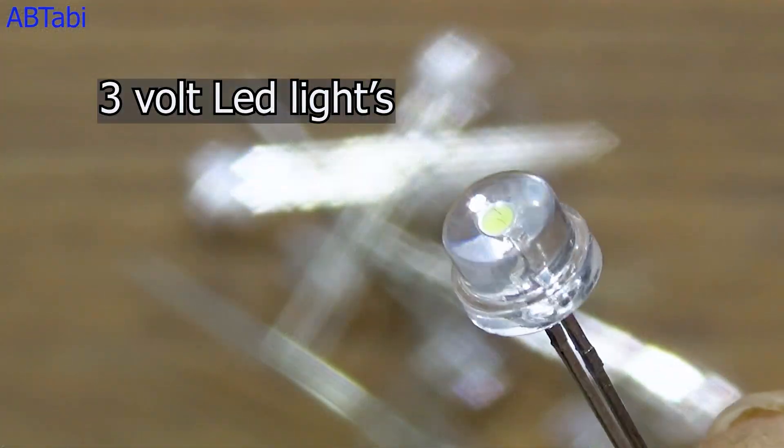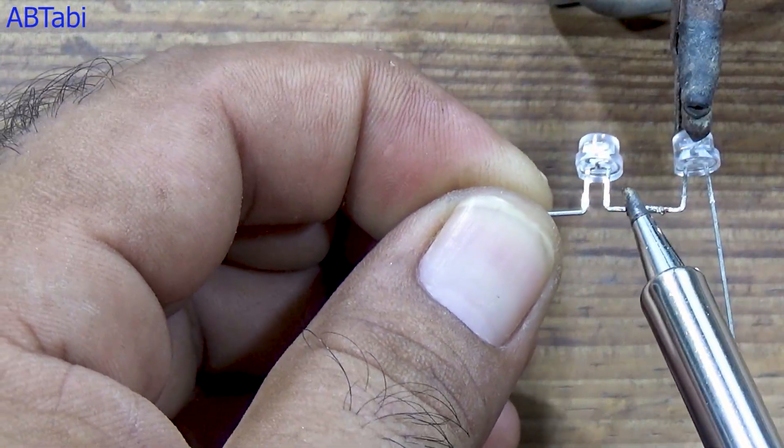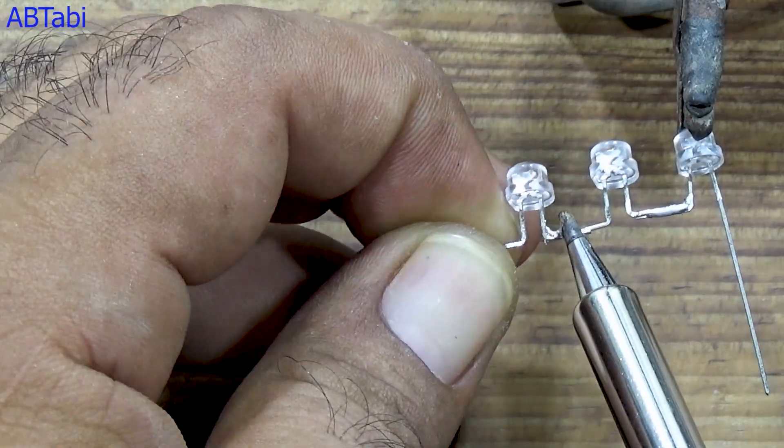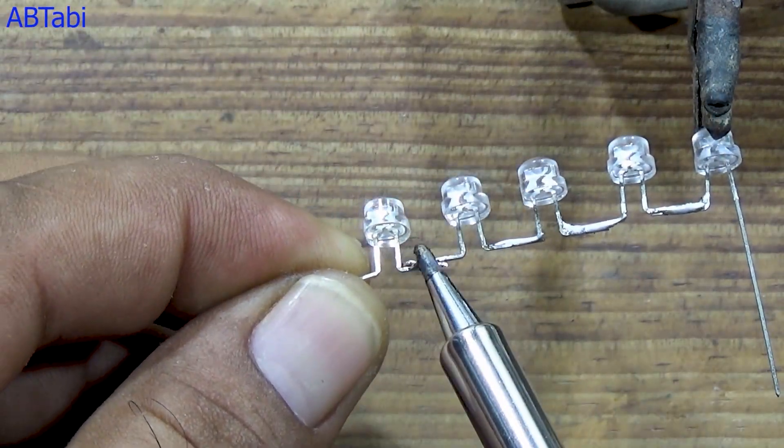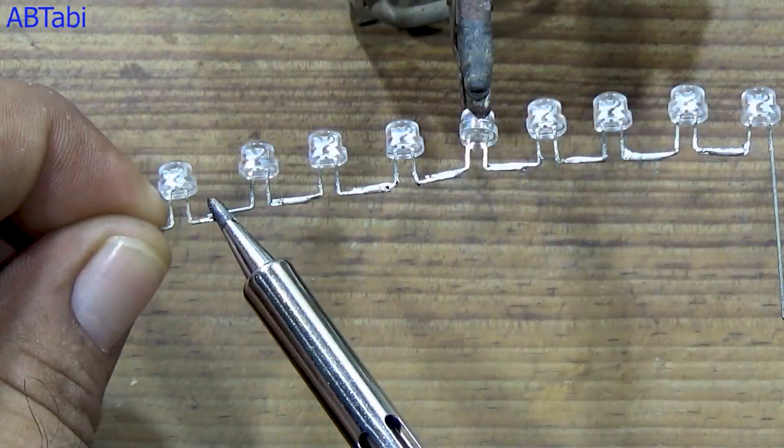Did you know you can make an LED bulb that works directly on AC power using very few components? Today, I'll show you how to make a simple LED light bulb circuit using white LEDs and basic electronic parts.